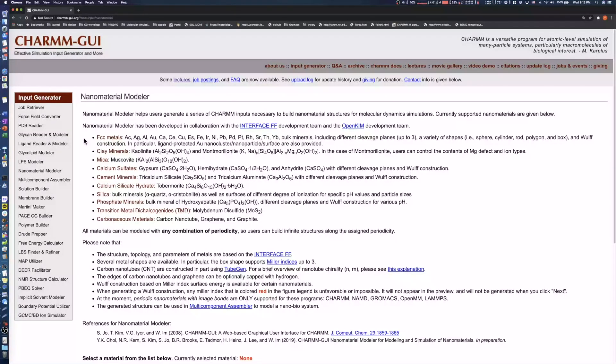Currently Nanomaterial Modeler supports 10 classes of nanomaterials including face-centered cubic metals, clay minerals, mica, calcium sulfates, cement minerals, calcium silicate hydrate, silica, phosphate minerals, transition metal dichalcogenides, and carbonaceous materials.